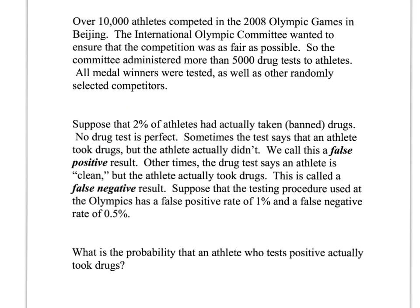We have some probabilities given here: 2% of athletes actually take banned drugs, 1% result in a false positive, which means 1% of those who don't take drugs will get a positive test result, and then we have a false negative of 0.5%. Here's the question: how good are these tests? What is the probability that an athlete who tests positive actually took the drugs?